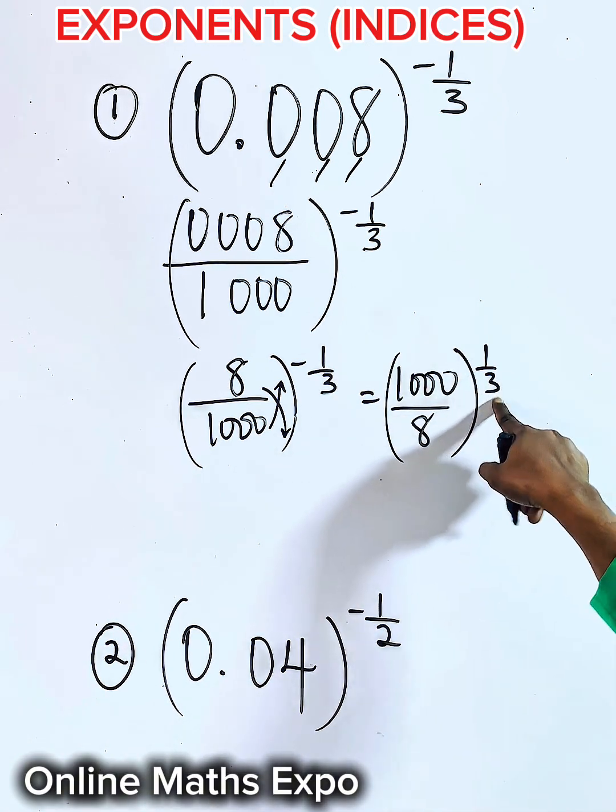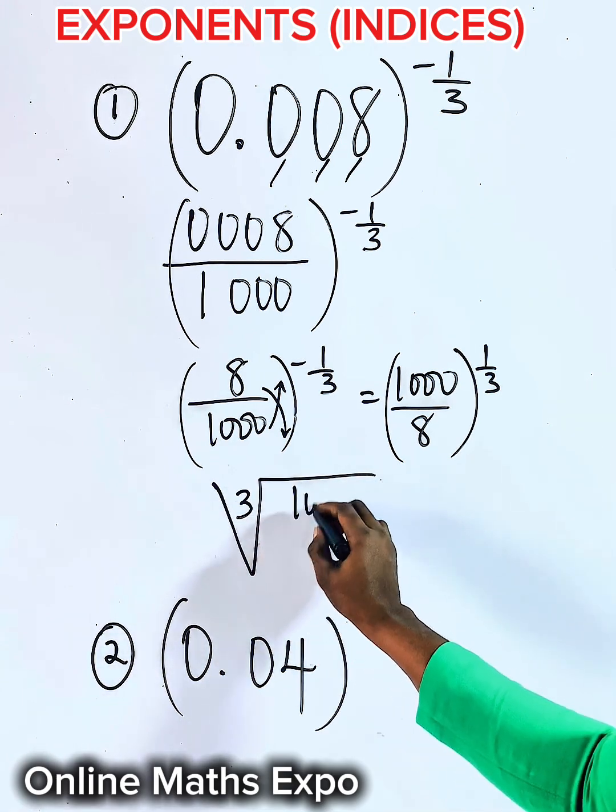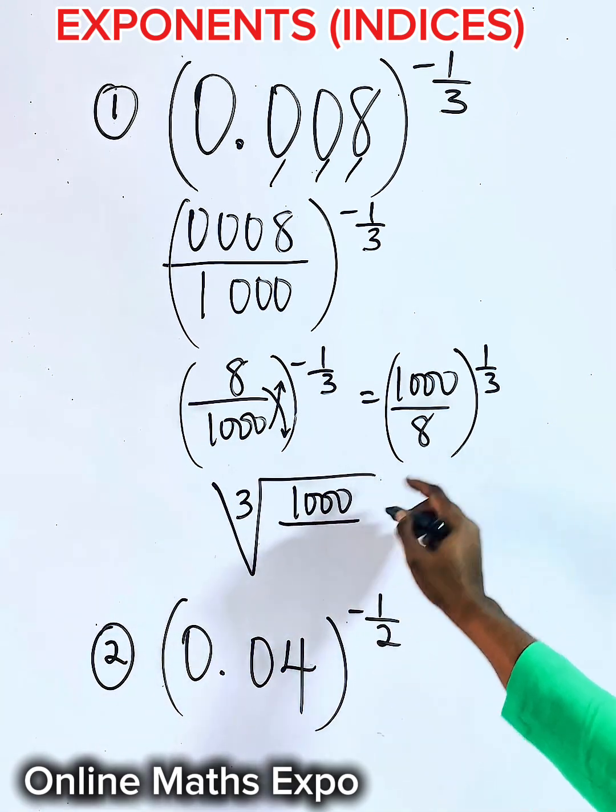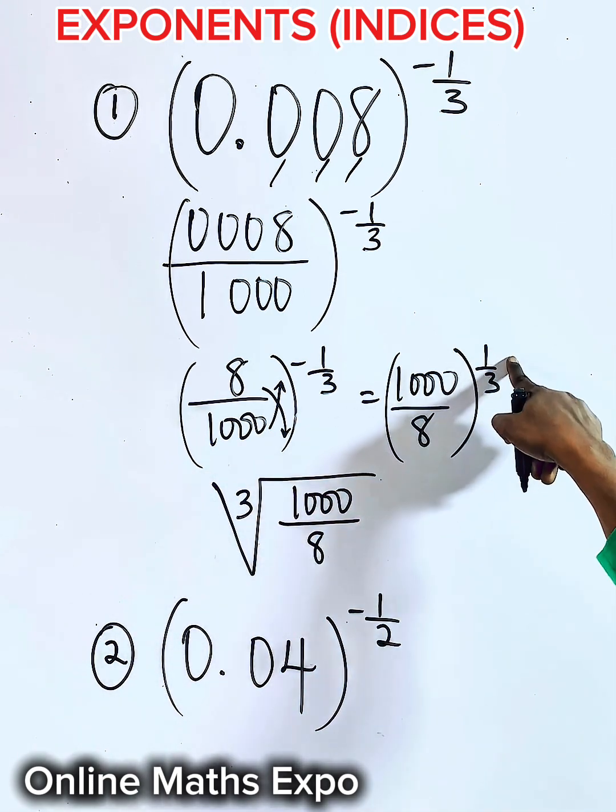Now what do you do? Use this denominator to form the root. So we are having cube root of 1,000 divided by 8 and you raise to the power of 1. Anything raised to the power of 1 is the same.